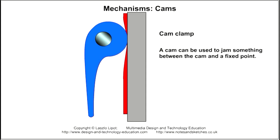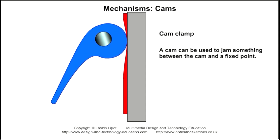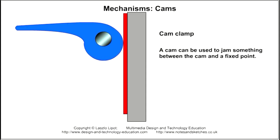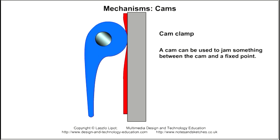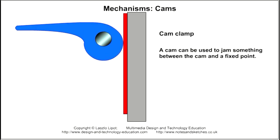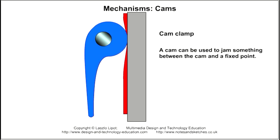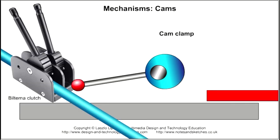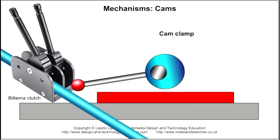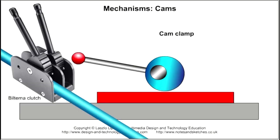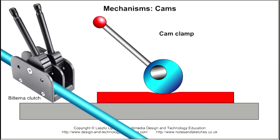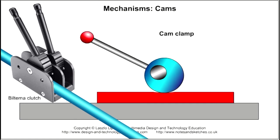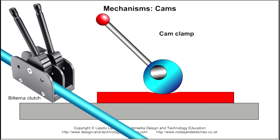The eccentric or off-centre axis of plate cams makes these cams suitable for pushing and pulling applications. In this design, the cam is used as a clamping device. In this design, the cam is used as a clamping device for ropes on yachts and dinghies.